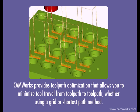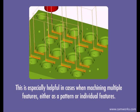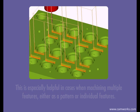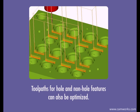CAMWORKS provides tool path optimization that allows you to minimize tool travel from tool path to tool path, whether using a grid or shortest path method. This is especially helpful in cases when machining multiple features, either as a pattern or individual features. Tool paths for hole and non-hole features can also be optimized.